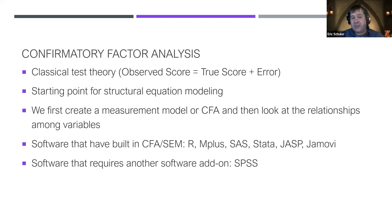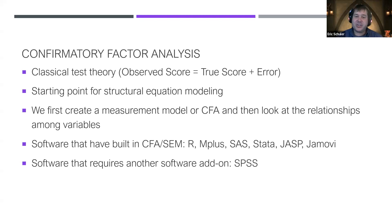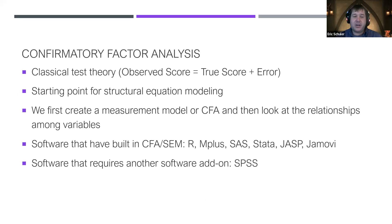We do have software with SEM and CFA built in: R, M-Plus, SAS, Stata, JASP, Jamovi — those all have built-in options. M-Plus is super expensive. Stata has some good options. JASP, Jamovi, and R are all free, so I tend to prefer those. That said, M-Plus can do some really fancy stuff. A lot of folks use SPSS, but the downside is that if you want structural equation modeling in SPSS, you have to buy AMOS, which is a separate license we don't have through AU. If you're thinking about AMOS, let me know and I can walk you through how to use the AU license with a single purchase of AMOS.